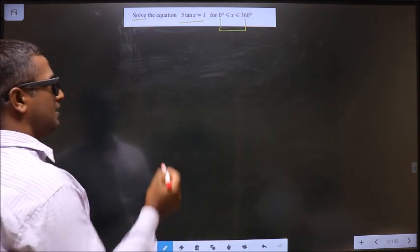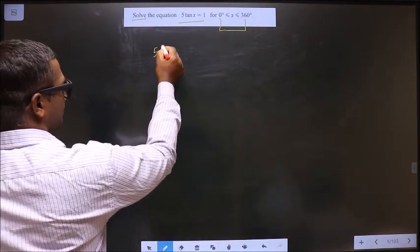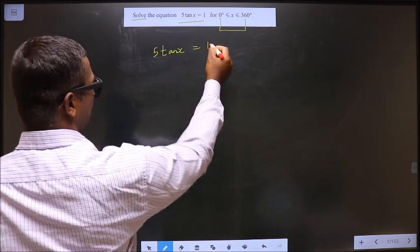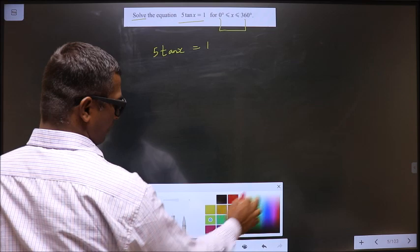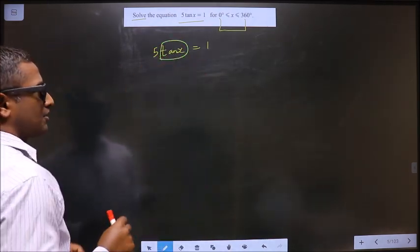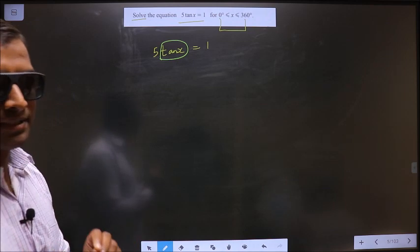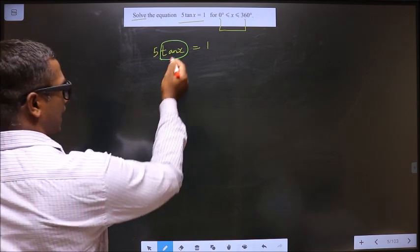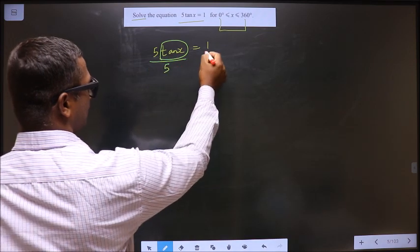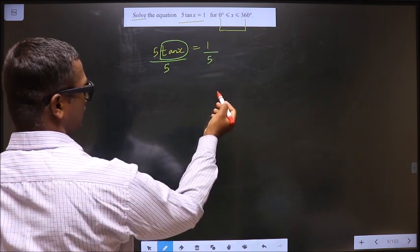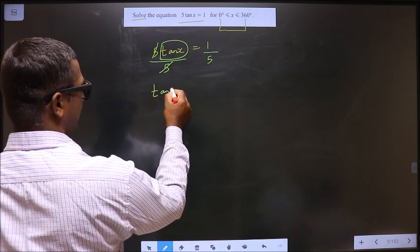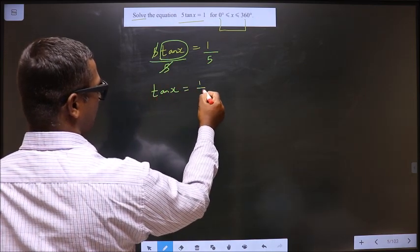Okay. First, given equation is 5 tan x equal to 1. Here we have tan x, so first you make tan x the subject. To make tan x the subject, 5 should be removed. So to remove 5, you divide by 5 on both sides. So this cancels out, I get tan x equal to 1 by 5.